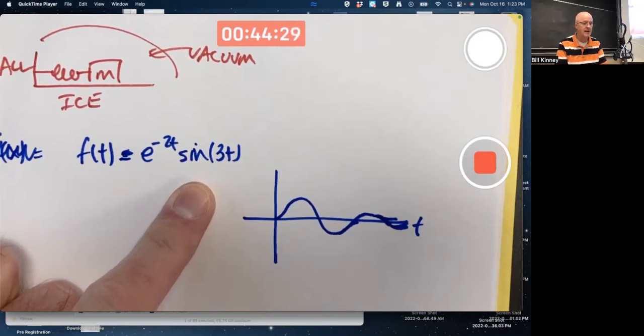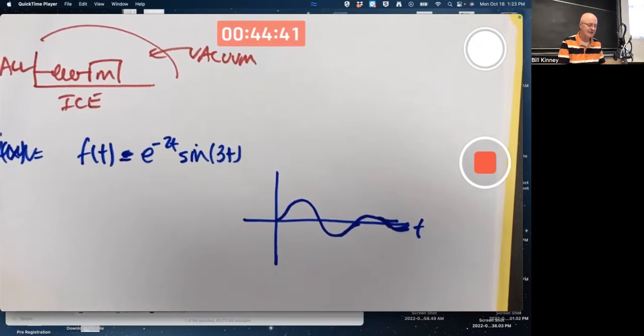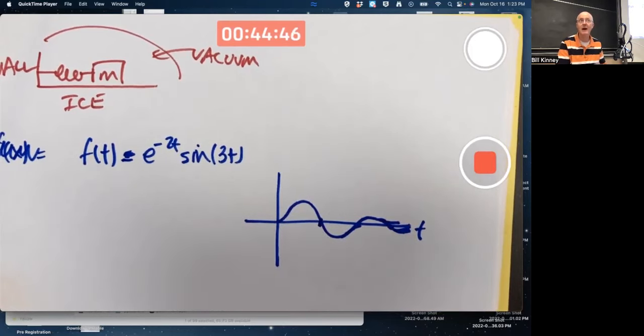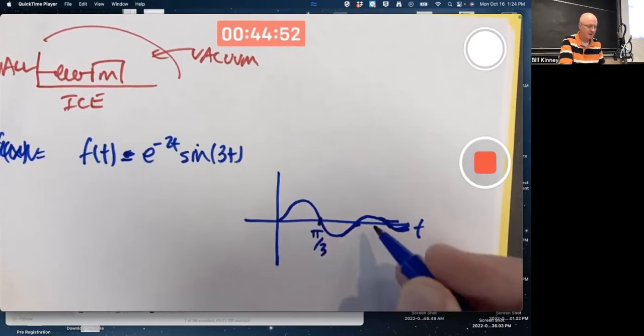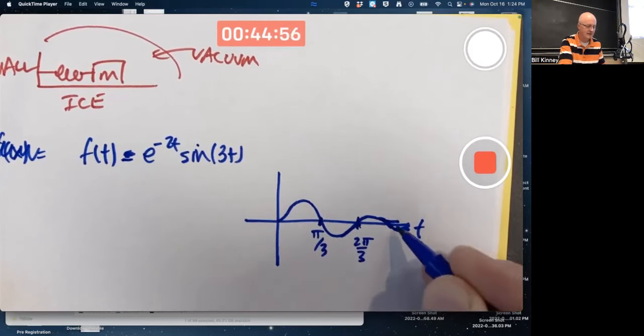In fact, it's a sine of 3t. So we can figure out the t-intercepts here. They're the same as where sine of 3t is 0. Sine itself is 0 when the input is 0, when the input is pi, 2pi, 3pi, 4pi, 5pi, any integer multiple of pi. So the intercepts of this is going to be when 3t is pi, or 2pi, or 3pi. So the first one is going to be at pi over 3. The second one is going to be at 2pi over 3. This intercepts at pi, etc.